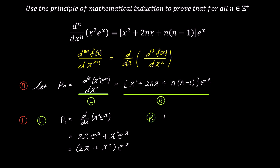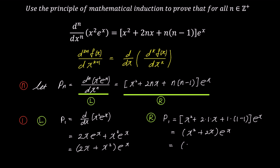To find the right side of P(1), we substitute n with 1 in the expression above, resulting in bracket x squared plus 2 times 1 times x plus 1 times (1 minus 1) bracket times e to the power of x. Simplifying gives (x squared plus 2x) times e to the power of x. Rearranging the terms inside the parenthesis, it becomes (2x plus x squared) times e to the power of x, which is equal to the left side L. Therefore, we have proven that the first term is true — that is, the first domino falls.